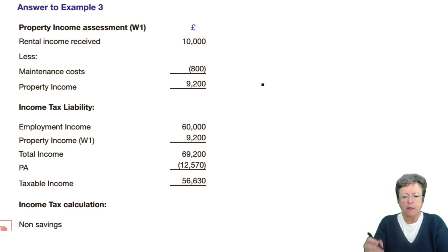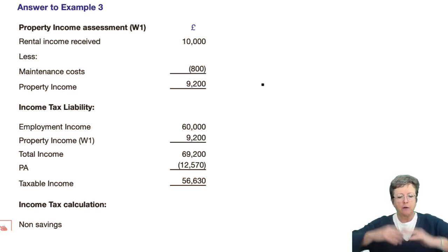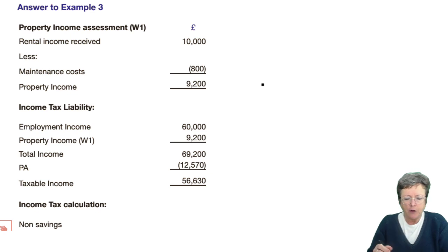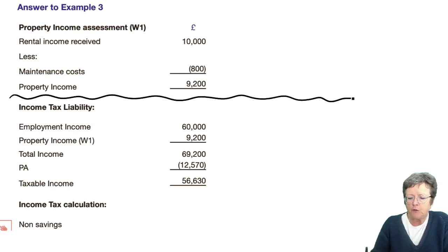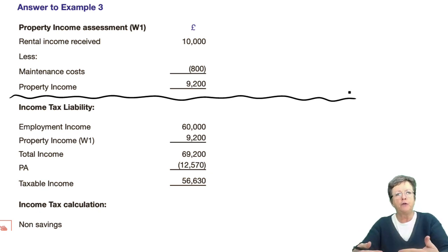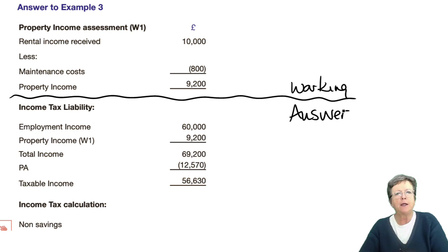First things first. This is where we talked in Chapter 2 about doing workings first and then the answer, or the answer and then workings first. So this top part here is the working, and in this example the workings have been done first, then this underneath here is the answer. It doesn't matter whether you do the workings first and the answers second, as long as you clearly show the examiner what you're doing.